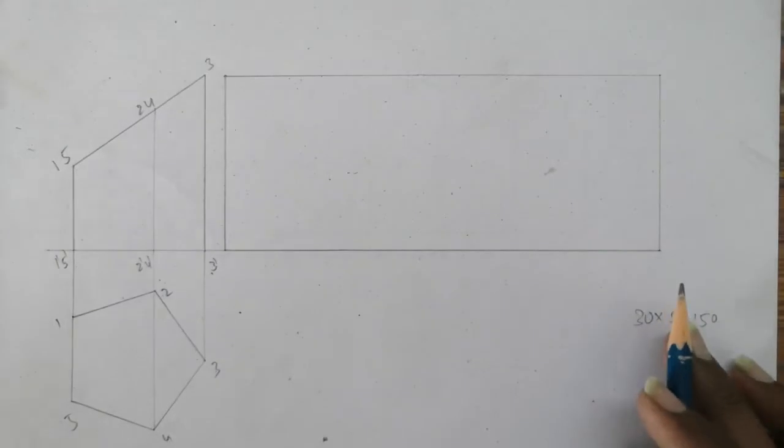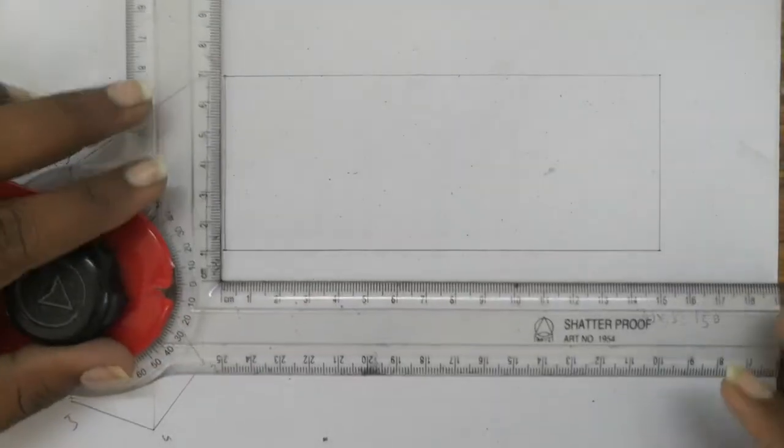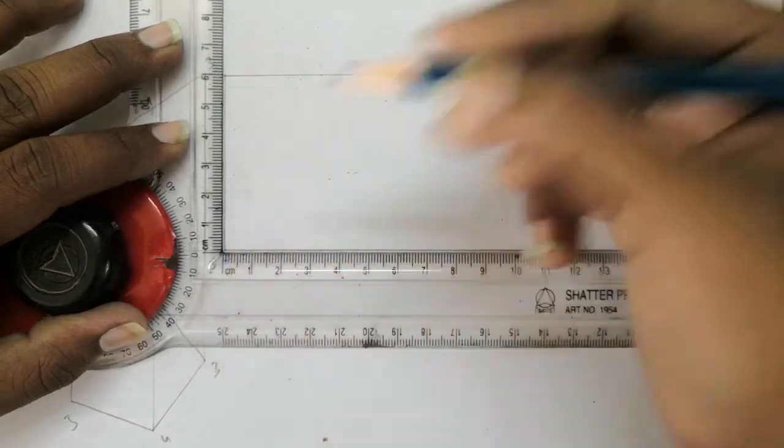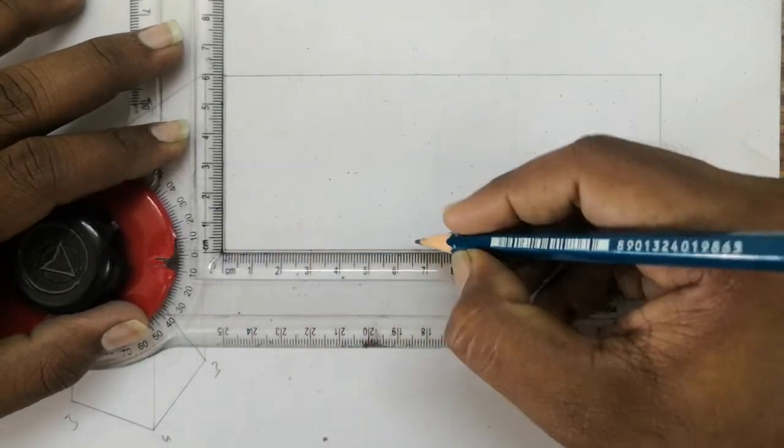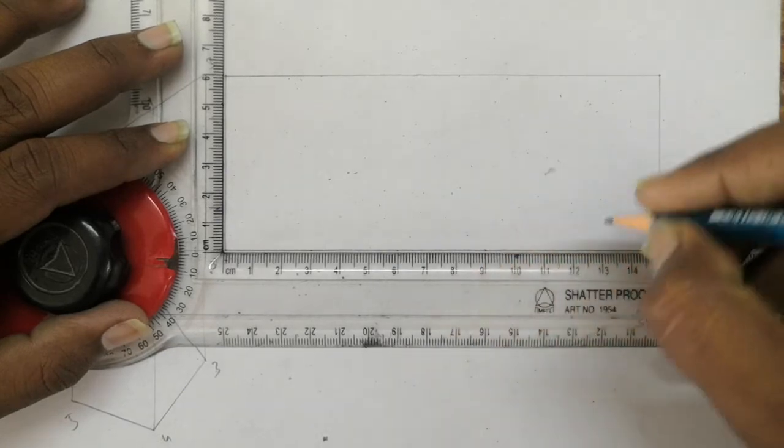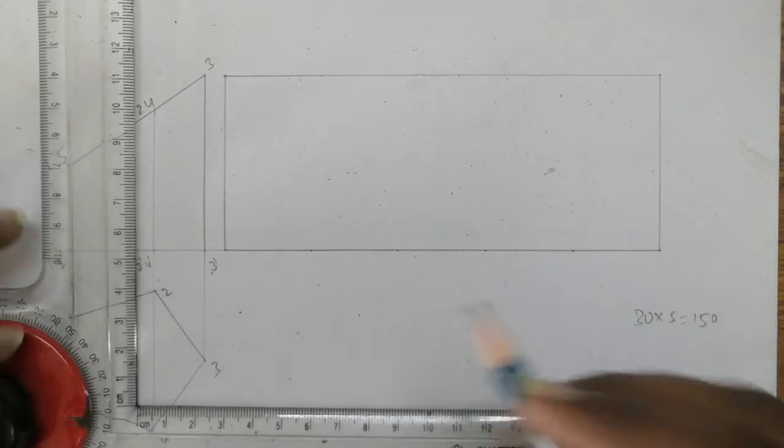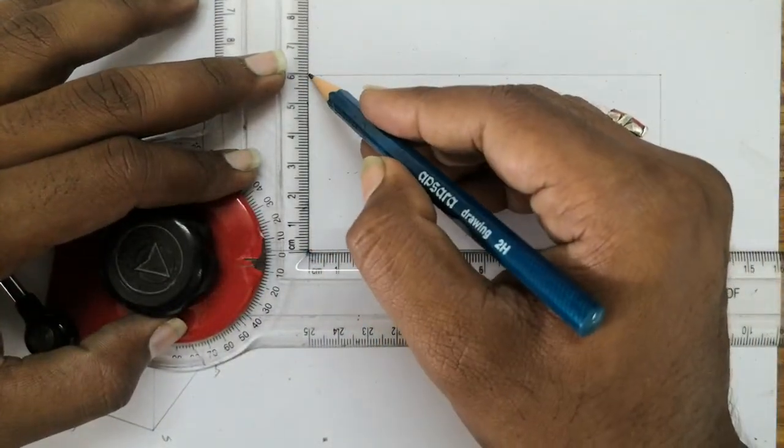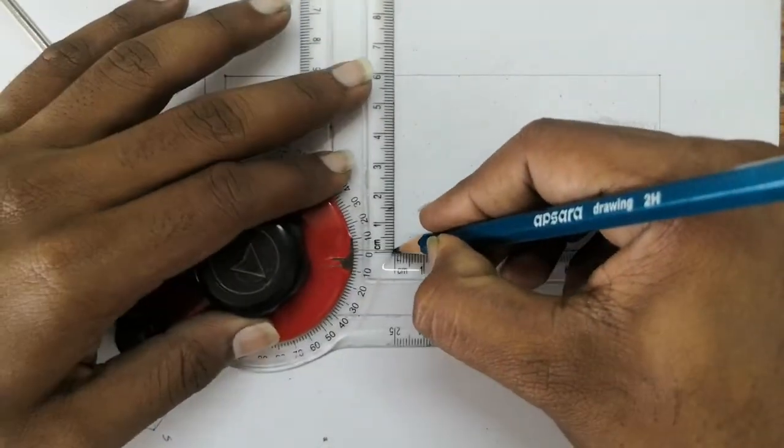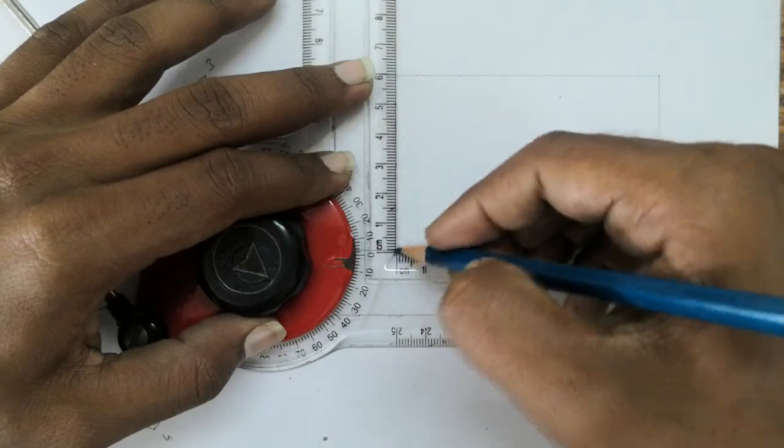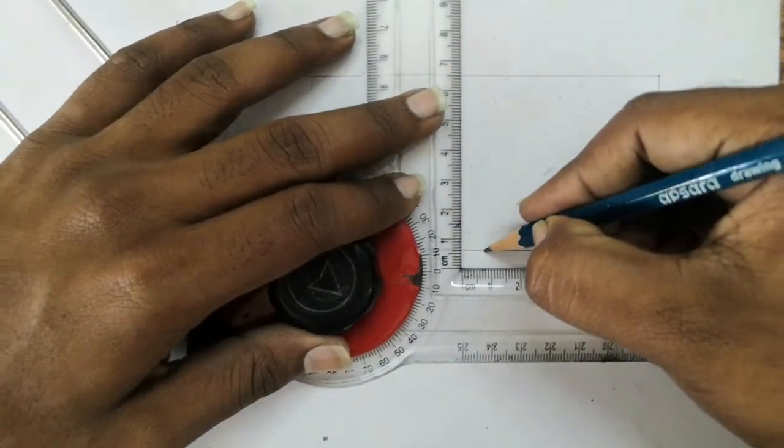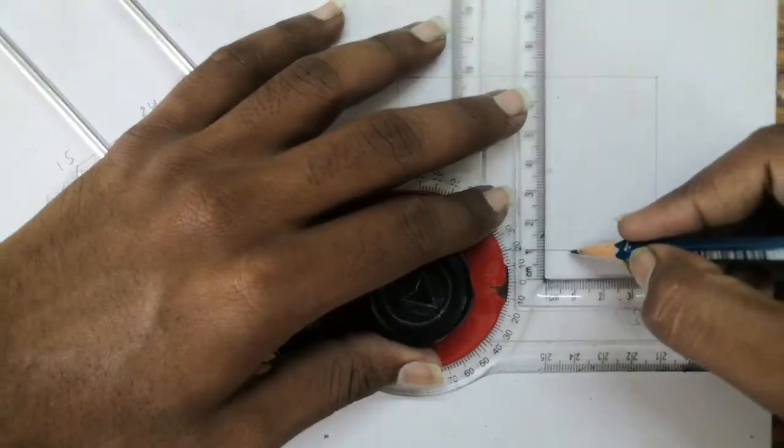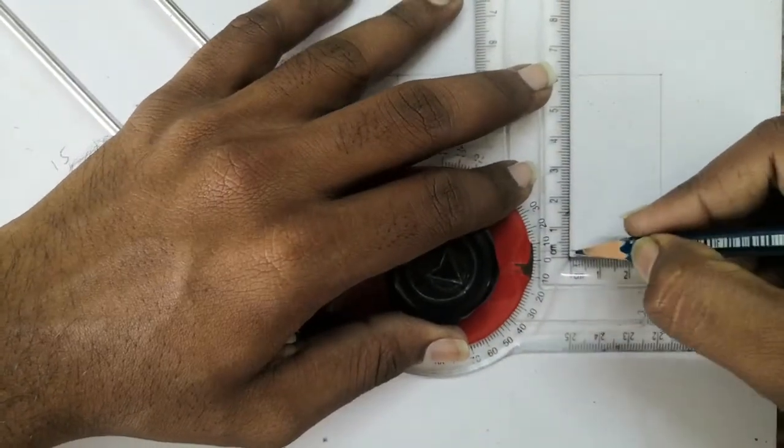Now you have to divide the base into equal number of parts, 30mm each. As the pentagon, you have to divide it into 5 parts. 1, 2, 3, 4. So this is 1st part, 2nd part, 3rd part, 4th part and 5th part. Draw vertical lines as this is a prism. Draw faint lines first, then we can highlight later.